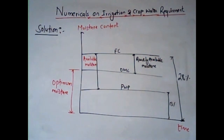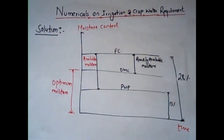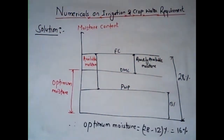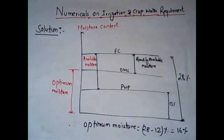We need to find the optimum moisture content from the origin. The field capacity is 28%, and if we subtract the readily available moisture (12%) from the field capacity, we obtain the optimum moisture content: 28% minus 12% equals 16%. So the optimum moisture content is 16%.